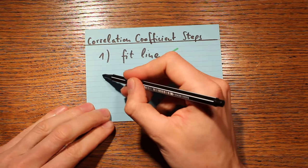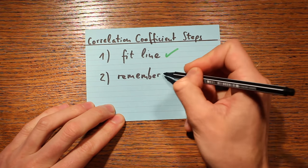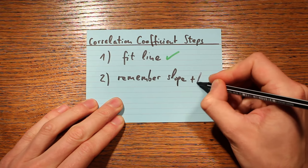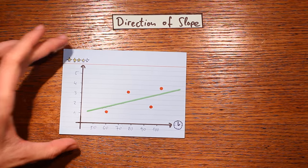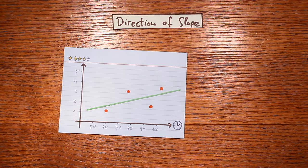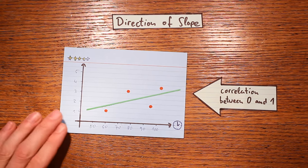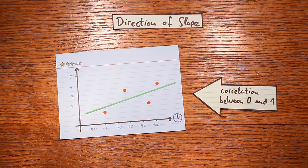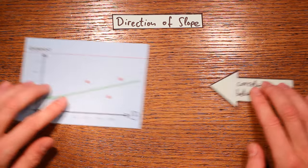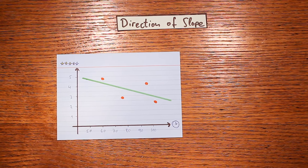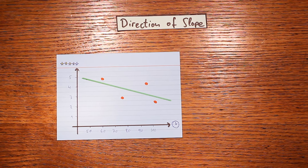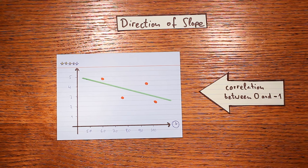In the second step, the correlation coefficient simply remembers if the slope from the straight line fit is pointing upwards or pointing downwards. In the first data set the slope is positive, and in that case the correlation coefficient is positive as well — between zero and one. In the second case, the longer movies tend to get worse ratings, so the slope is negative, and the correlation coefficient is negative as well, between zero and minus one.